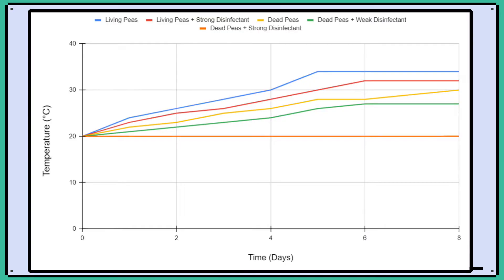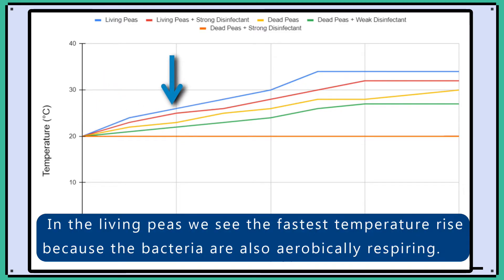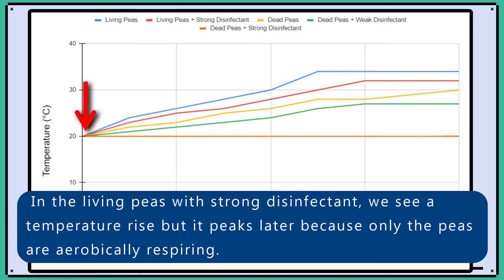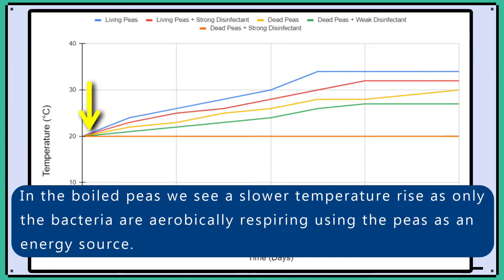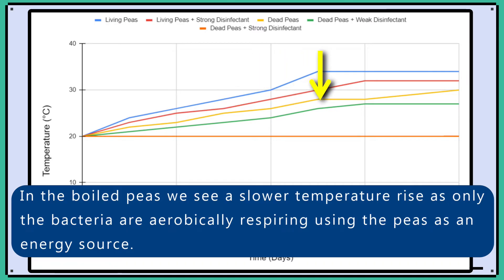We see the following temperature changes over time. In living peas, we see the fastest temperature rise because the bacteria are also aerobically respiring. In the living peas with strong disinfectant, we see a temperature rise but it peaks later because only the peas are aerobically respiring. In the boiled peas, we see a slower temperature rise as only the bacteria are aerobically respiring, using the peas as an energy source.